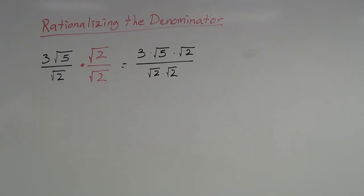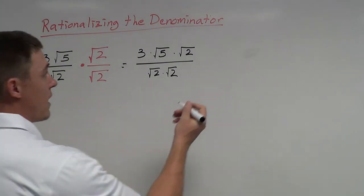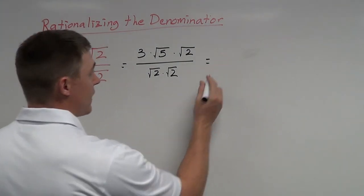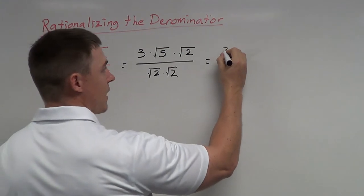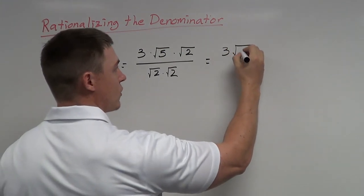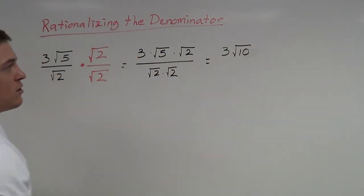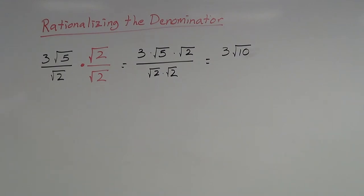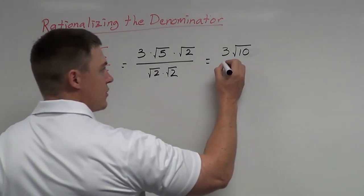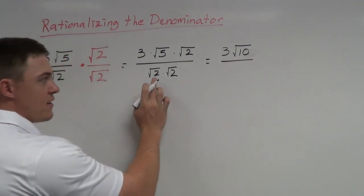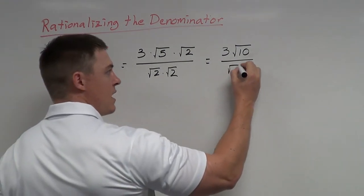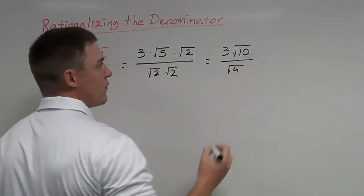Refer back to the product property of square roots — that's why we can do this. So I can multiply these together: 5 and 2 make 10, so I have 3 root 10. When you multiply, it stays underneath the radical. So that's what the top looks like. The bottom: the square root of 2 times the square root of 2 is the square root of 4.